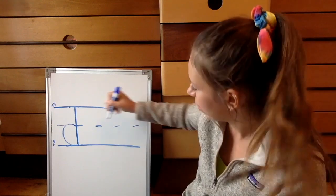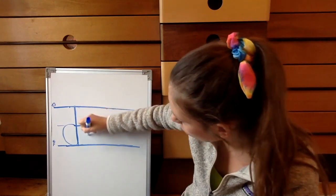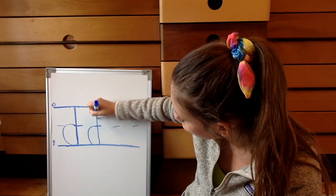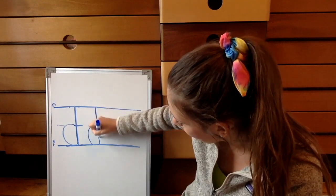That's a tricky one. Again, start at the middle line. Go around, straight up, and back down.